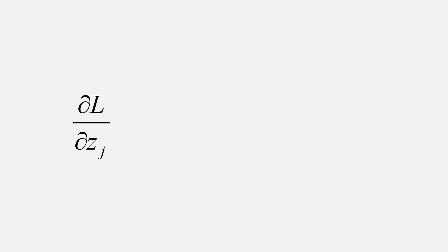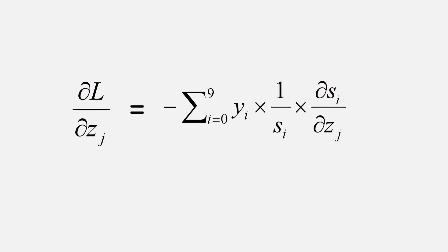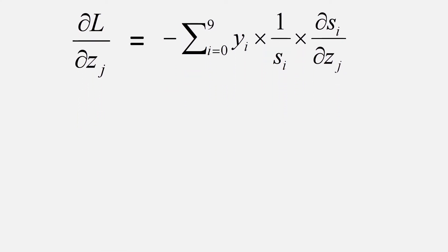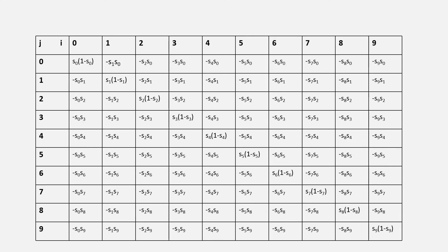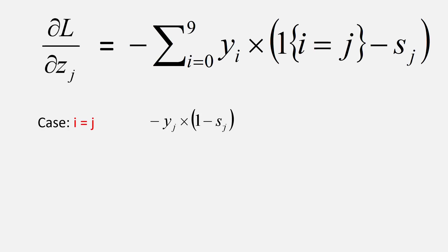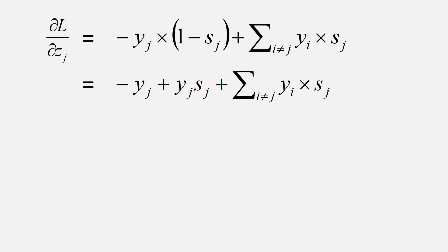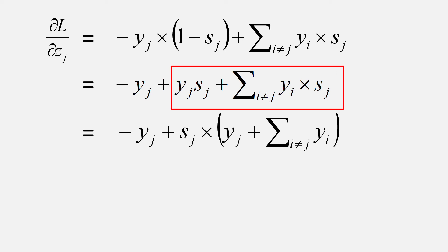To find the derivative of the neural network outputs z_j with respect to the loss L, we get this. Looking at the right-hand side, we have a log which can be factorized. Recalling that ∂s_i/∂z_j can be rewritten using the expression we derived, and after substitution and replacement, we get this. The s_i in the numerator and denominator gets cancelled. After cancellation, let's break this into two parts: where i equals j and where i does not equal j. Simplifying the left part where i equals j, we get this. If we club these two parts, we get this expression.